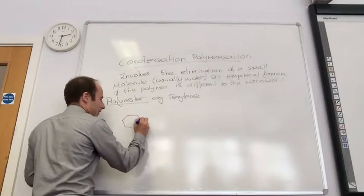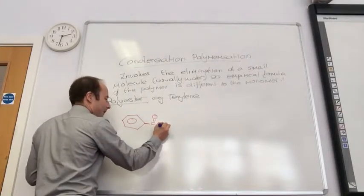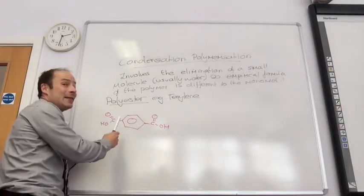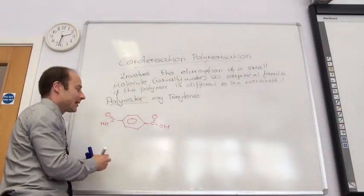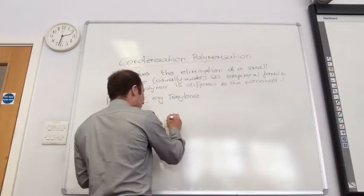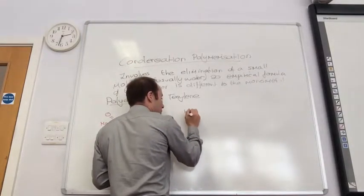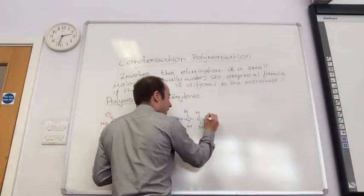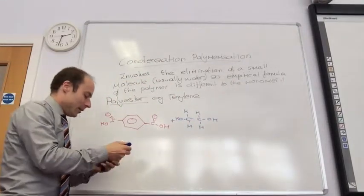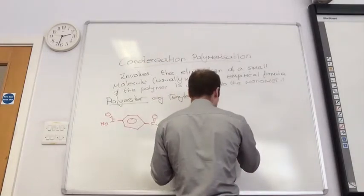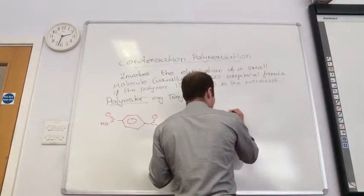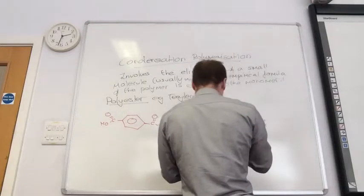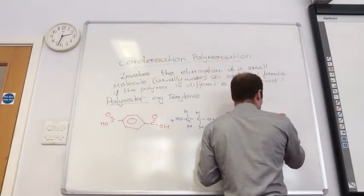So, that is benzene 1,4-dicarboxylic acid. And I'm going to join it together with a di-alcohol, which I will draw out like so. So, I'd recommend you draw it the same way as me. Let's carry on. I'm going to put another...